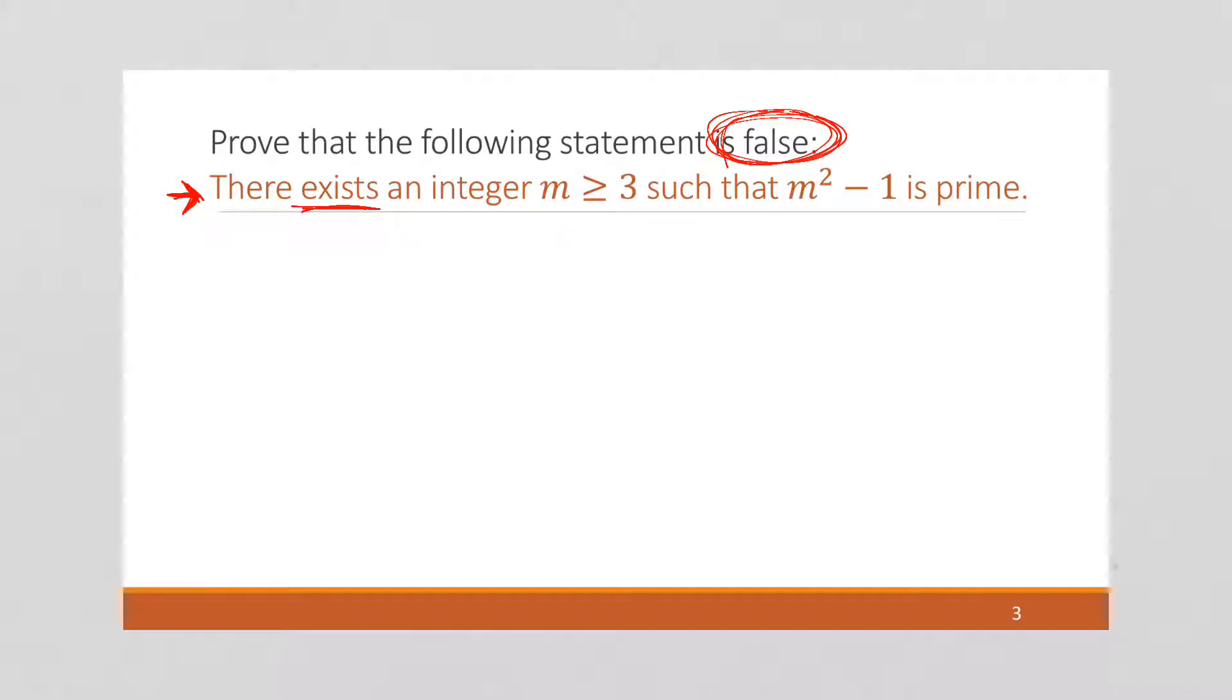So this statement is false. This means, so let's write this out. If this statement is false, then its negation must be true.